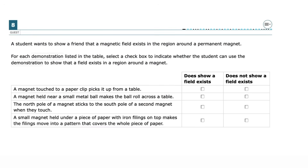For this problem, we're looking for evidence that a field exists in a region around a magnet. A magnet touching a paperclip picks it up from a table — touching the magnet to the paperclip shows magnetic attraction, but doesn't demonstrate the field because the objects are in contact. A magnetic field is about forces acting at a distance. A magnet held near a small metal ball makes the ball roll across a table; the ball moves without the magnet touching it, showing the magnet exerts a force at a distance — evidence of the magnetic field. The north pole of a magnet sticking to the south pole of a second magnet upon contact is also just physical attraction, not proof of a field acting at a distance.